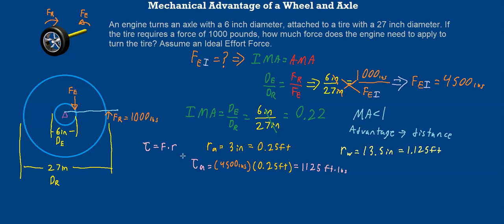Let me move this over to the left so we have some room to work. Using the radius at our wheel, we can find the torque at our wheel as well. That's equal to the force at the wheel, which was 1,000 pounds, multiplied by the radius at our wheel, which was 1.125 feet.